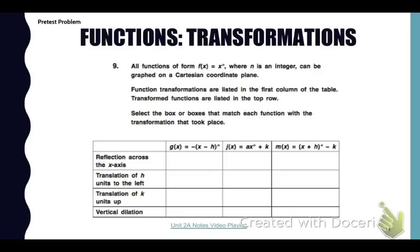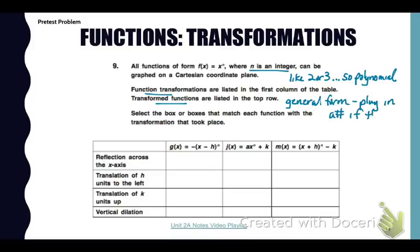Now go to number nine in your pretest packet. It says all functions of the form f(x) = x^n where n is an integer. This is just general math ease. If it helps you, you can put a number in there like 2 or 3. So f(x) = x² or x³. Then it says the function transformations are listed in the first column, and the transformed functions are in the top row. We need to select the box or boxes that match each function. So we can have one answer, no answer, or multiple answers. We have to really be thinking.